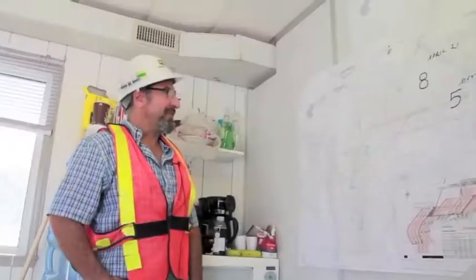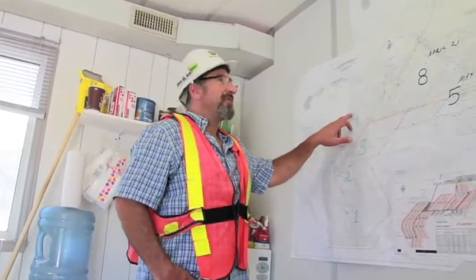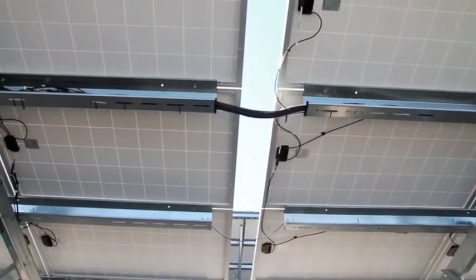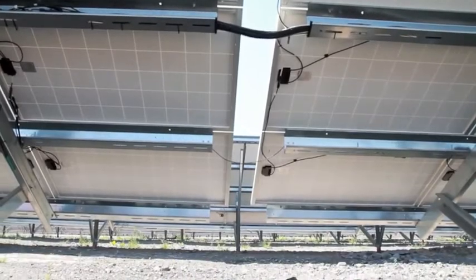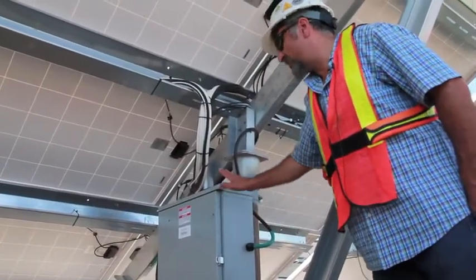We have 5,400 posts for supporting the tables. Of those 5,400, 4,000 are rock socket anchors, and 1,400 are helical piles.